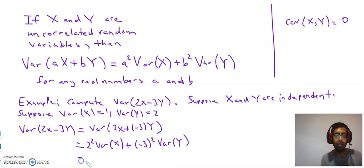And so now what we get here is 2 squared is 4, and variance of x is 1, and then plus minus 3 squared is 9, and the variance of y is 2. What we get here is 4 plus 18, and what we get is 22. So this is how you compute the variance of 2x minus 3y.